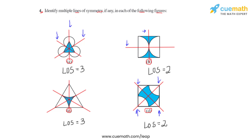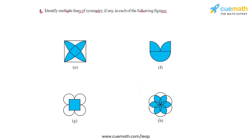In this part we had four figures and all four figures had multiple lines of symmetry. Now let us move on to the next set of figures in this question and find the lines of symmetry for them.